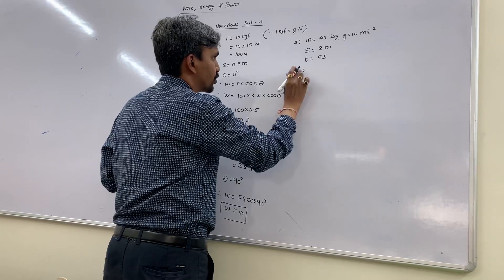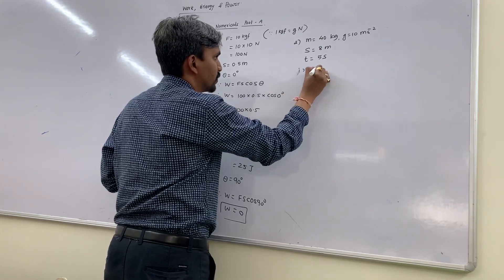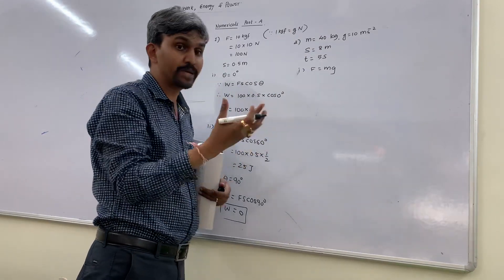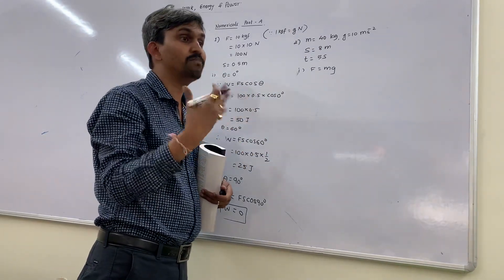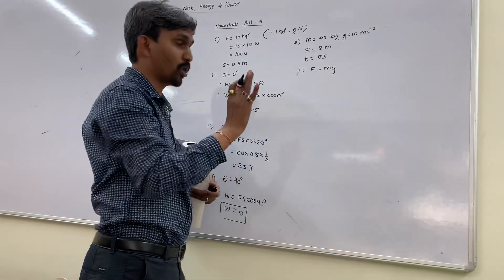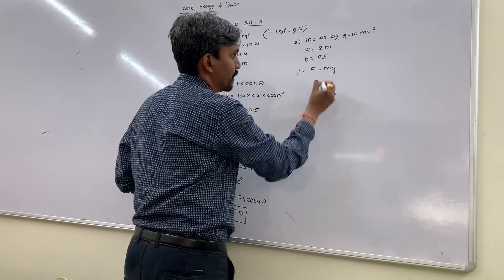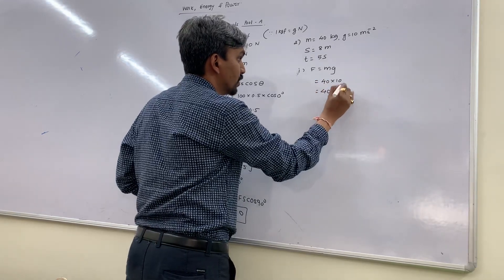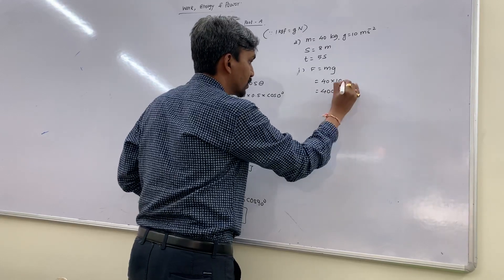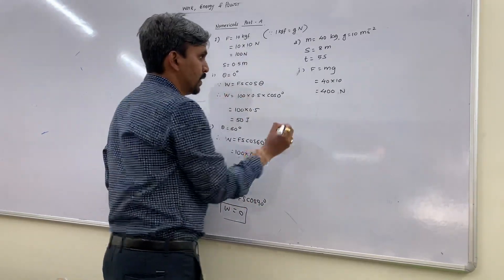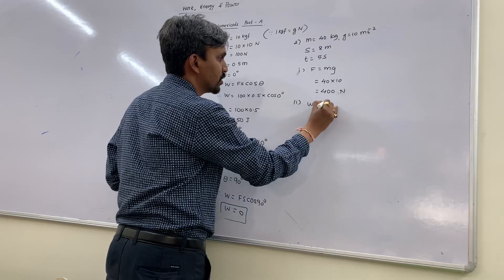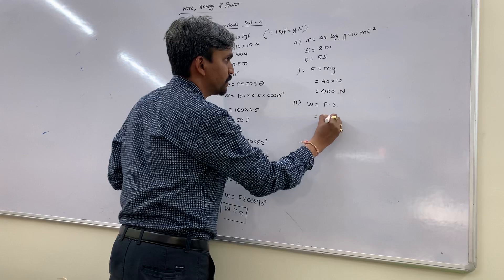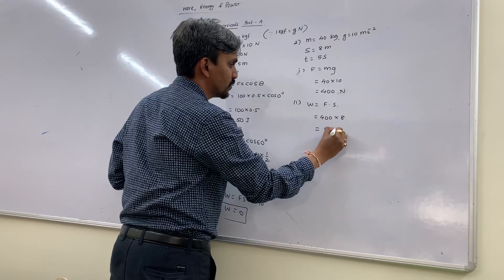First part: force is equal to M × G. Many students mistakenly write F = M × G × H — that is wrong. Force F = 40 × 10 = 400 Newton. Second part: work is equal to force × displacement. Work = 400 × 8 = 3200 Joules.